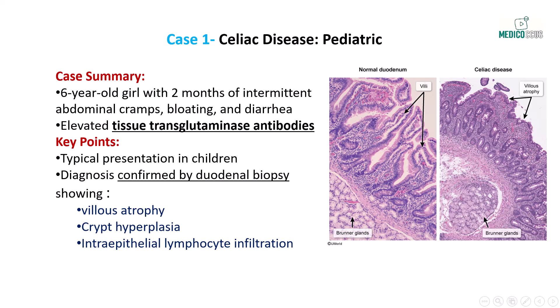Let's start with celiac disease, which is a highly high-yield topic. Our first case is a six-year-old girl who presents with a two-month history of intermittent abdominal cramps, bloating, and diarrhea. She also reports excessive flatulence, especially after meals. Vital signs are appropriate for her age, and physical examination reveals a mildly distended abdomen without tenderness or organomegaly. Laboratory evaluation shows elevated tissue transglutaminase antibodies. This case is typical of celiac disease, a gluten-sensitive enteropathy. The immune-mediated destruction of the small intestinal mucosa leads to malabsorption, with symptoms such as abdominal pain, diarrhea, and bloating.